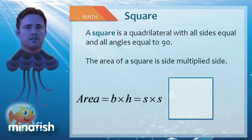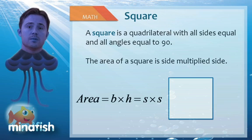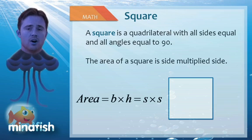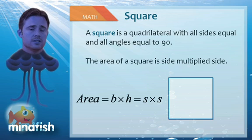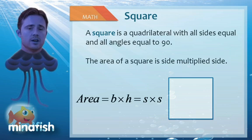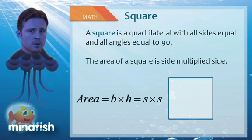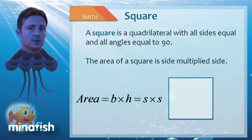The square is the final quadrilateral you need to be familiar with. The square has got all four sides equal, and again, the area is going to be base times height, but since all the sides are the same, we can say it's side times side, or side squared. We're now going to look at some questions dealing with quadrilaterals, to help you master this type of question.